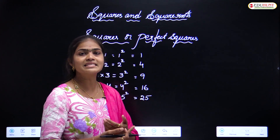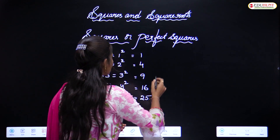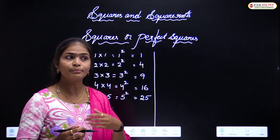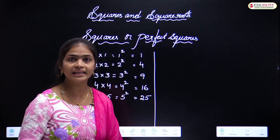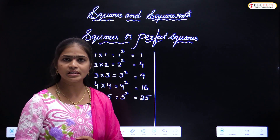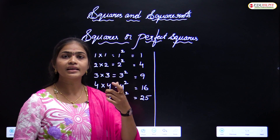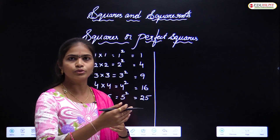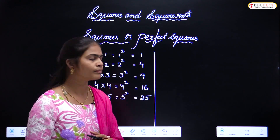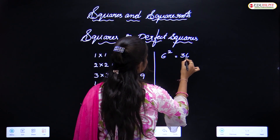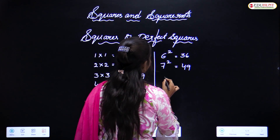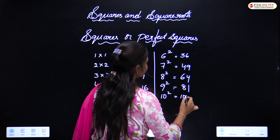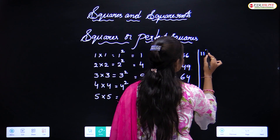You have to memorize up to twenty squares. Whenever anyone asks you what is the square of seventeen, you should immediately say 289 without thinking. You have to memorize all squares up to twenty - up to thirty is sufficient if you want to learn more. Six squared is 36, seven squared is 49, eight squared is 64, nine squared is 81, ten squared is 100.